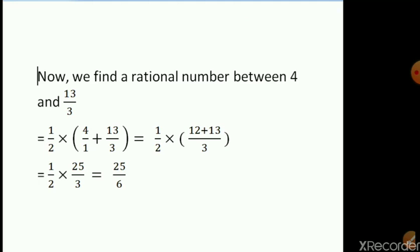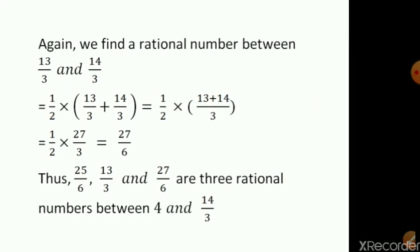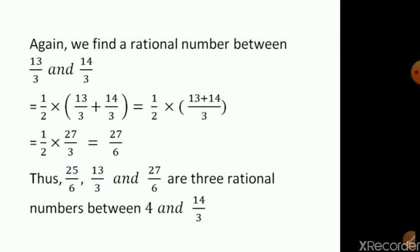The third rational number will be in between 13 by 3 and 14 upon 3. Again, 1 by 2 into 13 by 3 plus 14 by 3. Here both denominators are the same, so we write 3 as the denominator and add 13 and 14 to get 27 upon 3. In the next step, 1 by 2 cross 27 upon 3 gives us 27 upon 6. Hence the three rational numbers are 25 upon 6, 13 upon 3, and 27 upon 6.